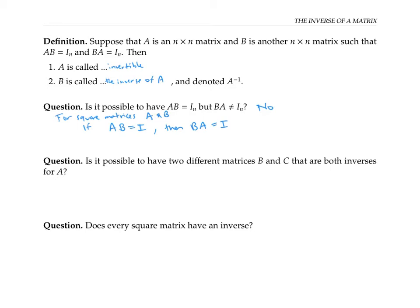You might also wonder, is it possible to have two different matrices B and C that are both inverses for A? In other words, could we have A times B equals I, B times A equals I, and also have A times C equals I and C times A equals I? Well, suppose I were in this situation, and I took the equation A times B equals I and multiplied on the left by C. Since C times A is the identity, this equation can be rewritten as I times B equals C times I. But the identity times B is just B, and C times the identity is C. So in fact, B would have to equal C. So the answer is no, they would end up having to be the same thing.